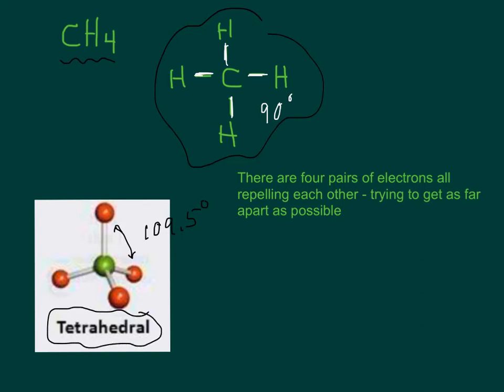They can get 109.5 degrees apart. The shape that they take is called tetrahedral. You're going to see tetrahedral any time there's four bonds and no lone pairs around the central atom. And 109.5 is an angle that you're going to need to remember.